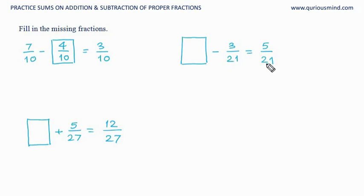Again here, if you see 21, 21, so the denominator of missing fraction also is 21. Now the number minus 3 should be 5, so the number has to be 8, because 8 minus 3 is 5. If you want, you can do the opposite of this. Just bring that 3 here: 3 plus 5 is 8.